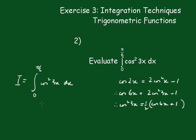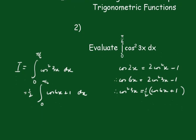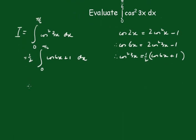So we'll just pop that in and we get a half outside of cos 6x plus 1 dx between pi upon 6 and 0. And now integrating that, we get 1 half. Now cos goes to positive sine. It's 1 sixth of sin 6x plus x.